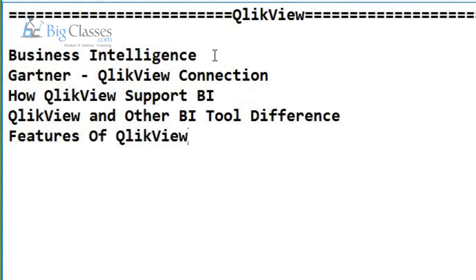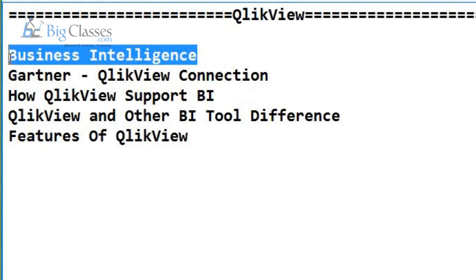Before we learn about QlikView, let's understand what Business Intelligence means. BI is taking raw data from the database and turning that data into information in the form of accessible and readable reports. That is what Gartner suggests about BI.